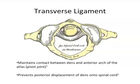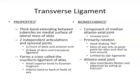It prevents posterior displacement of the dens onto the spinal cord. Properties of the transverse ligament include a thick band extending between the tubercles on the medial surface of the lateral mass of the atlas.